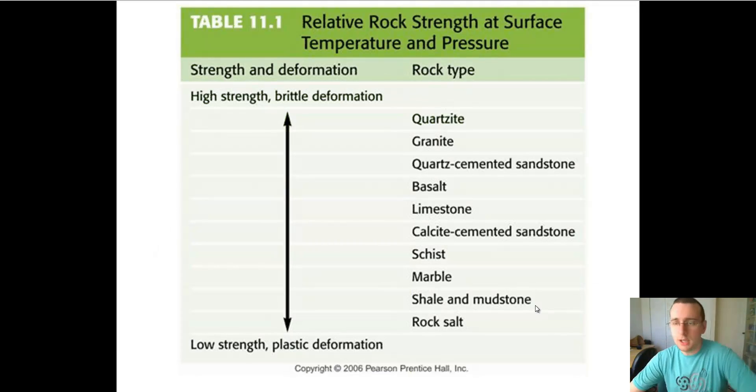So as you see here, the rocks towards the bottom are less strong and more likely to deform by bending or plastic deformation or ductile deformation. While the rocks near the top are more tough, so they're more likely to break before they actually bend.